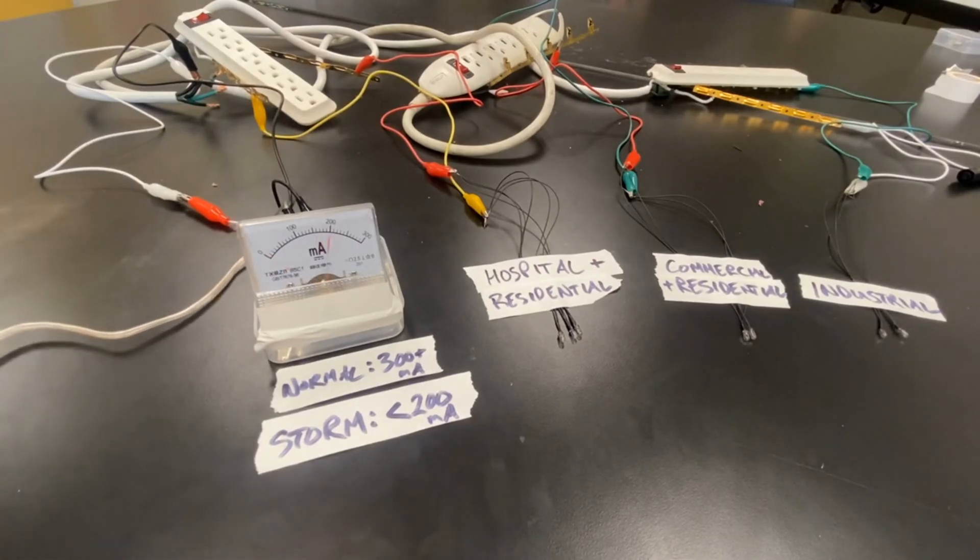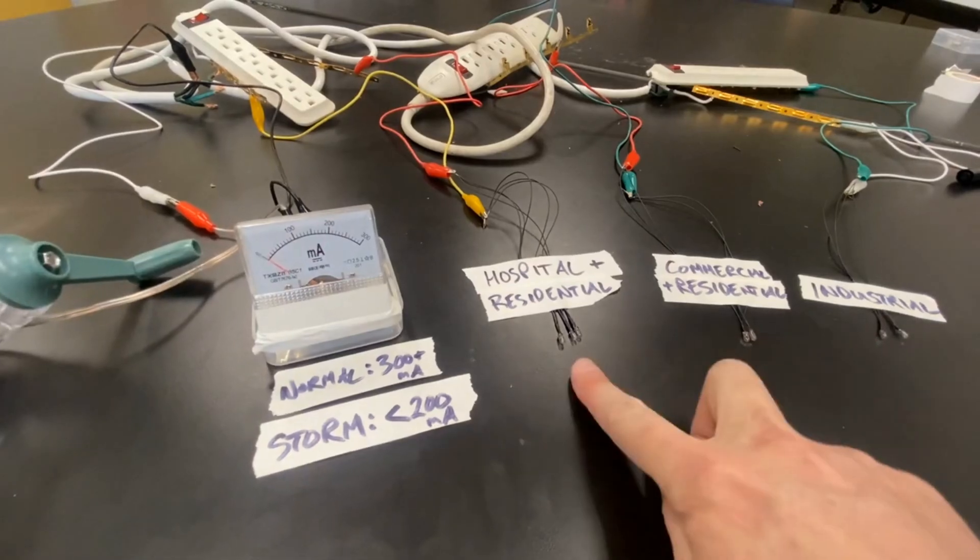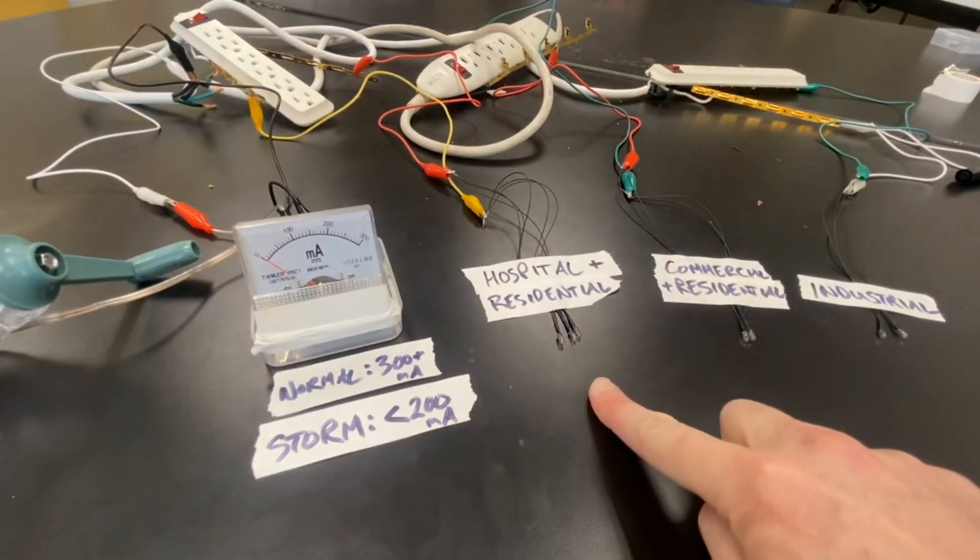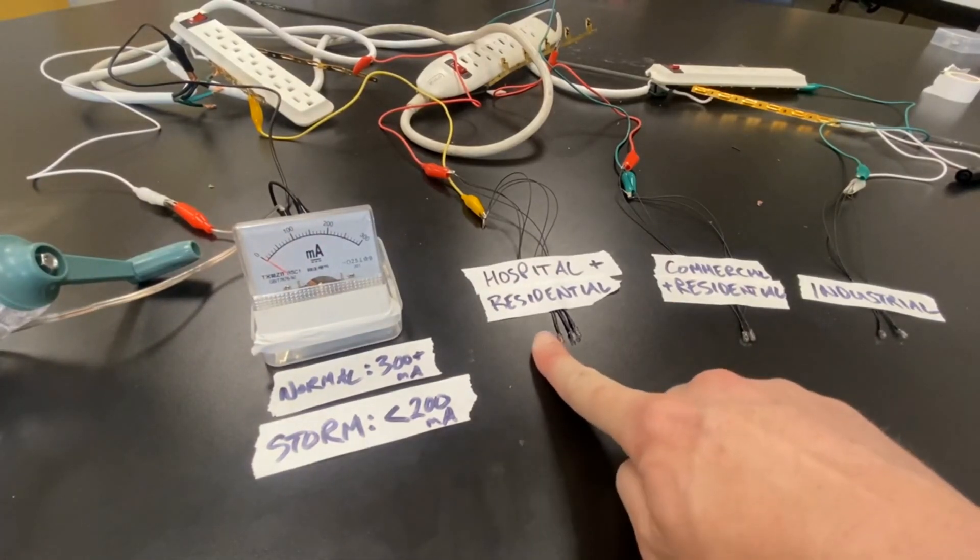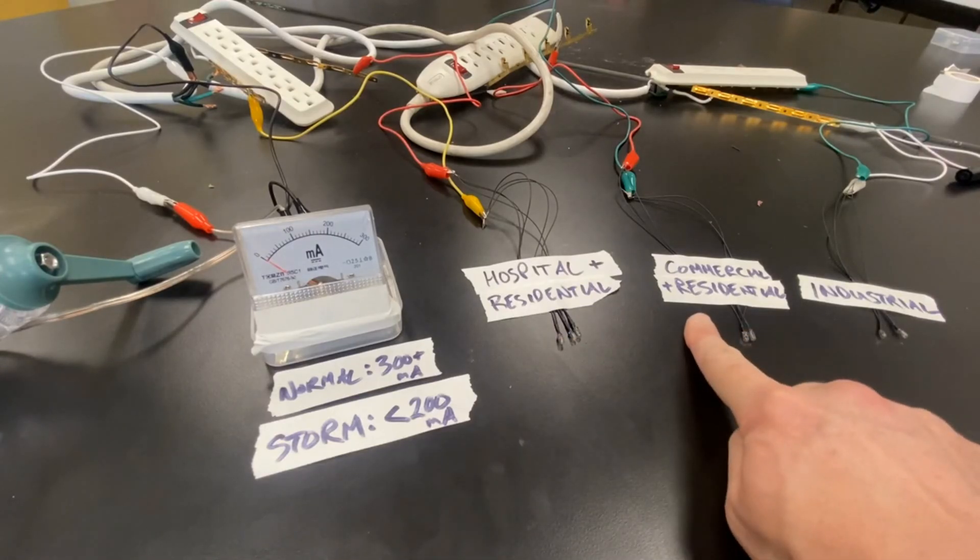So if we crank this at around 200 milliamps, we're still not seeing the hospital and residential and commercial areas turn on. So we're still left with a choice between these two substations. Do we deliver power to the hospital and the residential area or do we deliver power to the commercial district and the residential area?